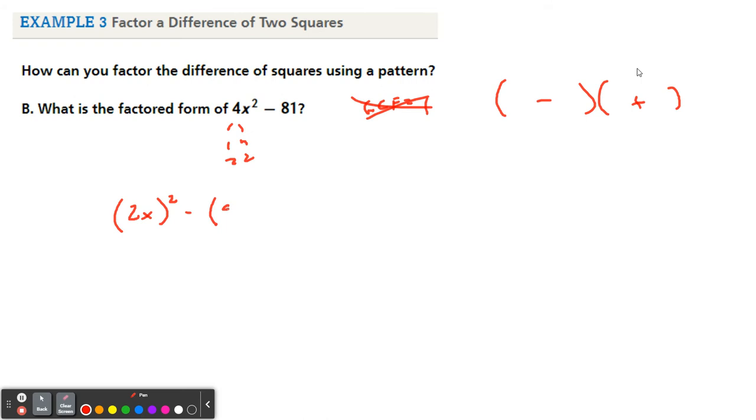81 is going to be 9 squared. And if you don't know that, do the square root of 81 in your calculator, and you'll get 9. And now I know that my two parentheses will be exactly the same. One's minus, one's plus. 2x and 2x at the starts. 9 and 9 at the back ends.